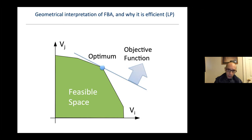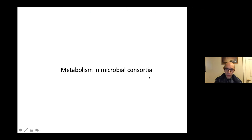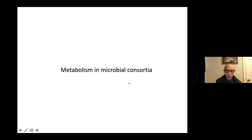We also showed the geometrical interpretation: there is a feasible space and we look for an edge and a vertex in this polyhedral cone — this convex structure representing the point that maximizes our objective function. Now we want to dive into how we can apply this to the study of microbial consortia, and I'll first show why metabolism really matters for microbial consortia.